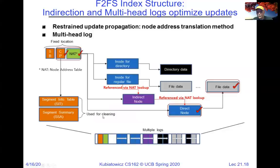F2FS has different logs — logs for direct nodes, logs for data, and logs for indirect nodes. The reason is each of these things has a different speed at which they're updated. Direct nodes might get updated frequently, but indirect nodes not so frequently. Each has a different part of the flash where it's writing a log, coalescing together things of the same speed so we don't garbage collect quite so frequently. Only the ones getting updated frequently need to be garbage collected frequently, and that saves flash storage as well.